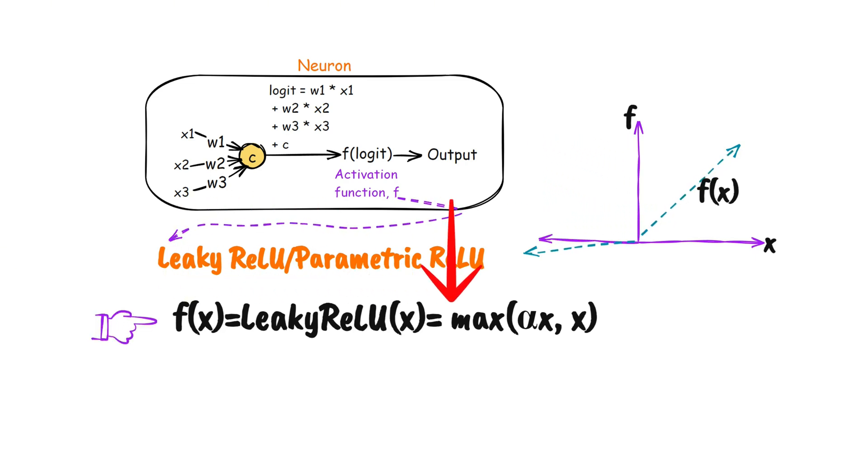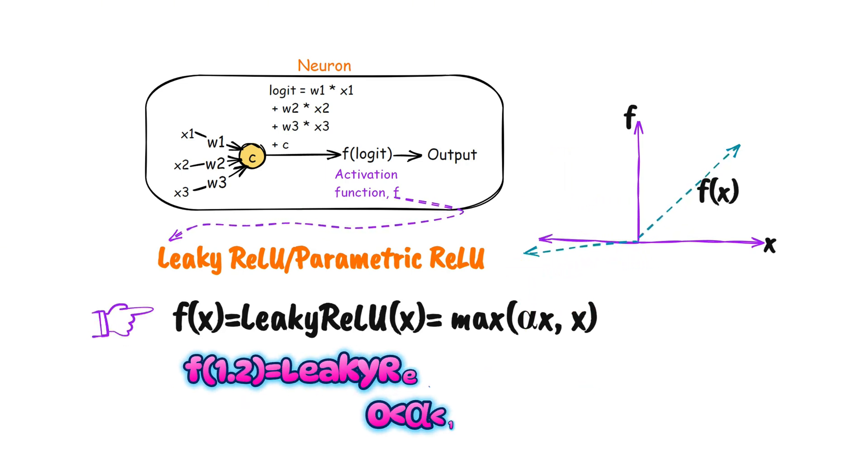Here is the formula. The output of leaky ReLU is its input when the input is greater than or equal to zero. If the input is a negative number, then it is the input times a small number.